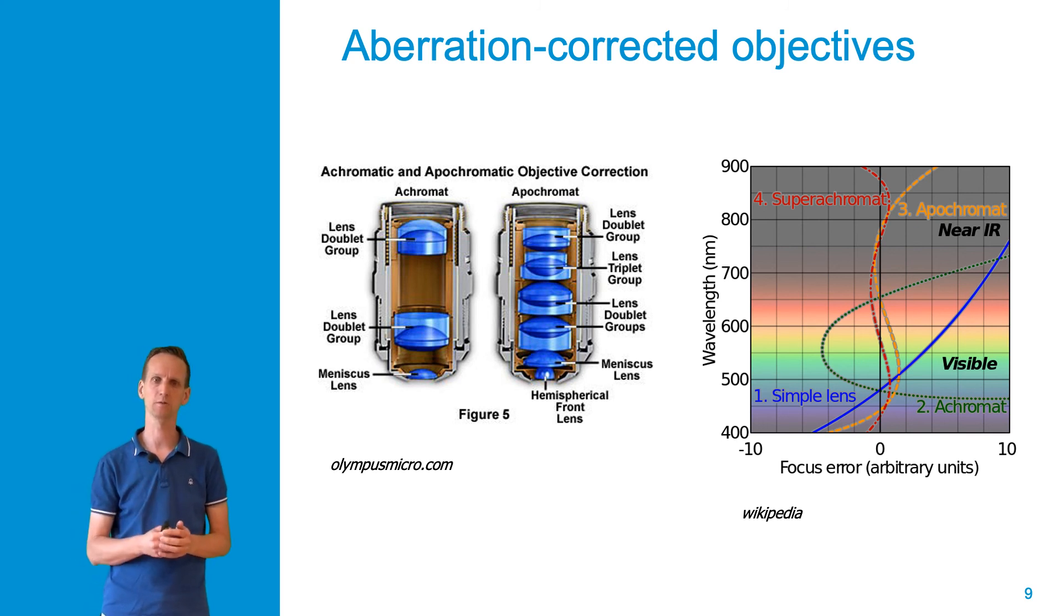For an apochromatic lens, we see that aberrations are corrected for four different points to be at the same focal distance, with only slight variations when we move to a slightly different wavelength regime. You can see the different curves for the different types of lenses.